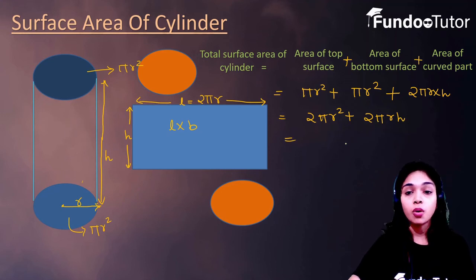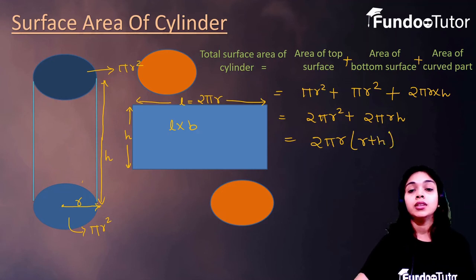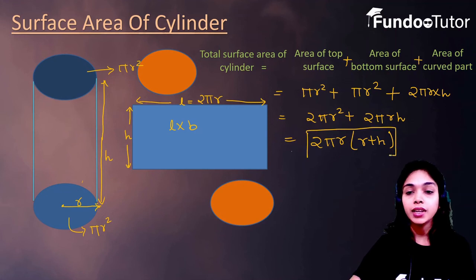So, 2 pi r is common in this board term. So, we will take 2 pi r common. Then, remaining term is r plus h. So, this is the formula of surface area of cylinder.